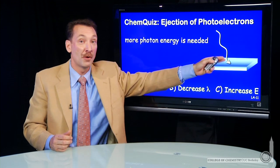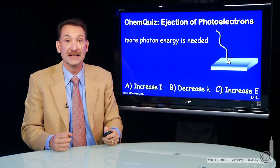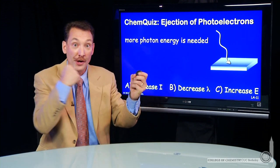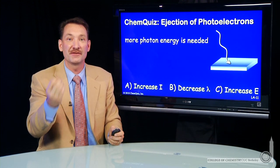If you have a photon that won't eject an electron, what do you need? You need photons with more energy. You have to increase the energy of the photon.